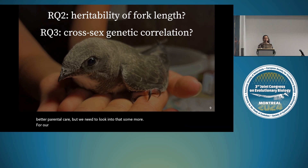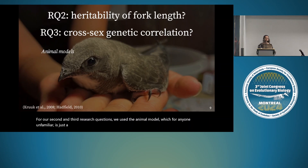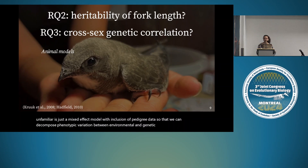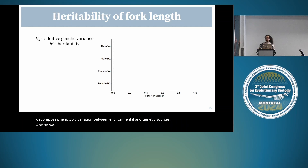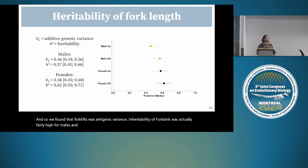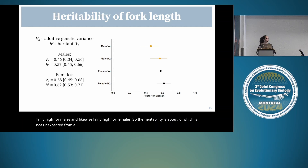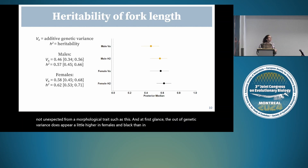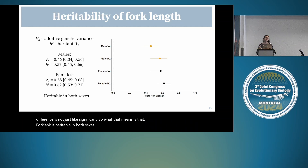For our second and third research questions, we used the animal model—a mixed effect model with the inclusion of pedigree data to decompose phenotypic variation between environmental and genetic sources. We found that heritability of fork length was fairly high for males and likewise fairly high for females—about 0.6—which is not unexpected for a morphological trait. The additive genetic variance appears slightly higher in females than in males, but this difference is not statistically significant. Fork length is heritable in both sexes, has the potential to respond to selection and evolve, and we expect it to evolve at the same rate in both sexes.